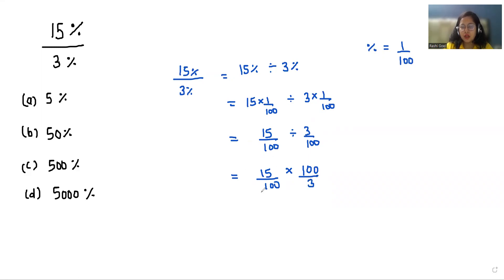Now we can cancel out 100 with 100, and 15 divided by 3 equals 5. So our answer is 5, but we have options given in terms of percentage.